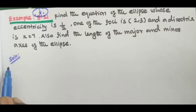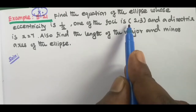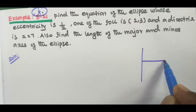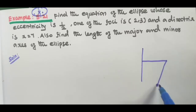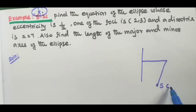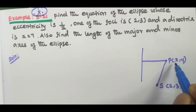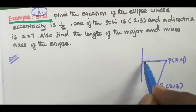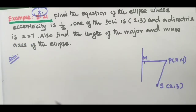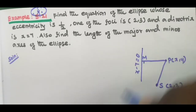This is the solution. First we need the focus and directrix. The focus is (2, 3). This is point P(x, y) and this is M. Then x = 7, so the equation of the directrix is x minus 7 = 0.